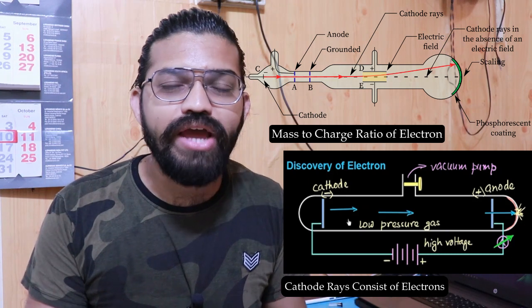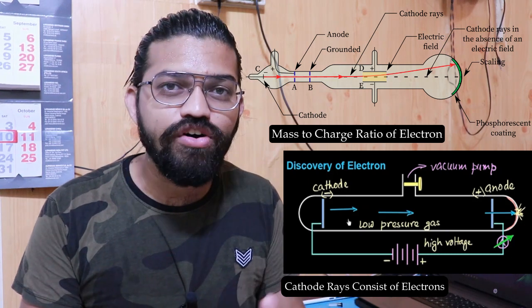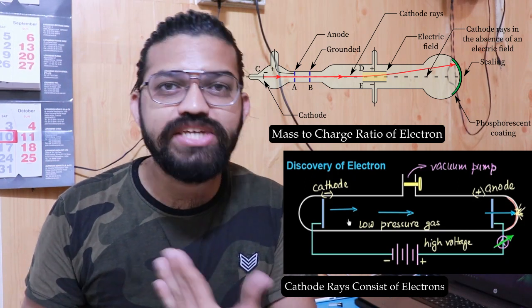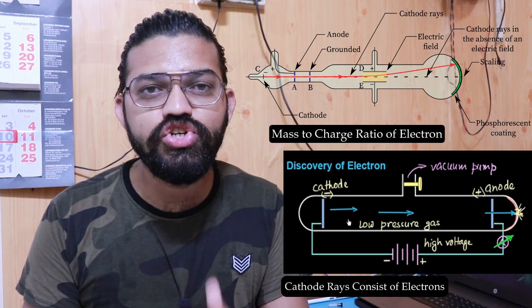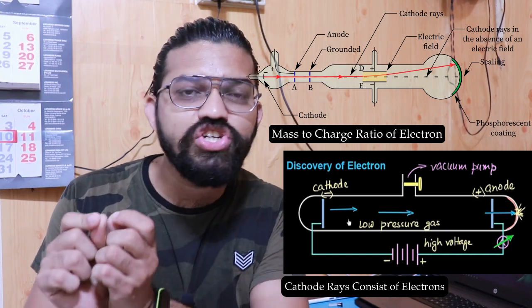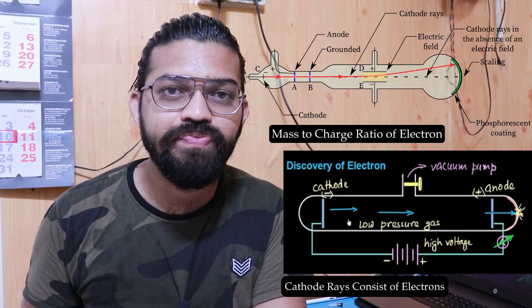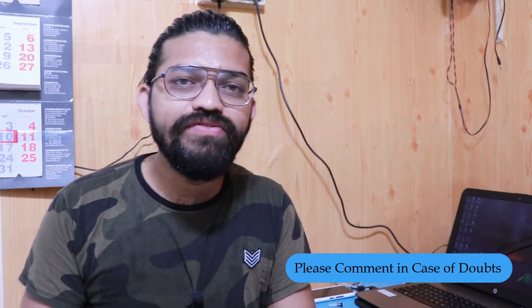That is it for today. In this video, we have learned about the cathode ray tube experiment and the discovery of the electrons. In the next video, we are going to learn about the mass-to-charge ratio and how the deflection of the cathode ray occurs to determine its mass-to-charge ratio. Thank you so much for watching. If you have any doubts or queries, please leave a comment. If my videos add value to your life and career, please do subscribe, as your subscription really motivates me to make more educational videos.